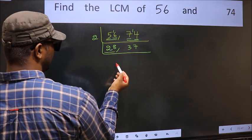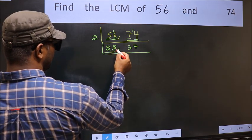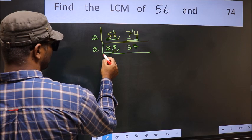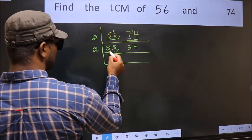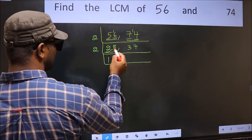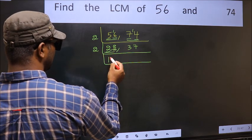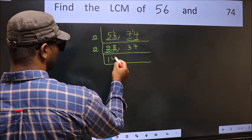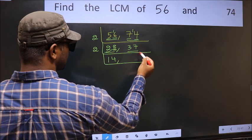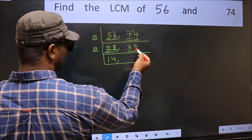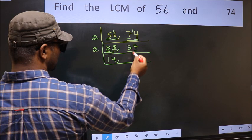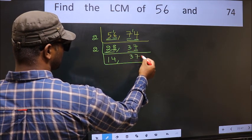Now here we have 28. Last digit 8 — A1 — so take 2. First digit is 2; when do we get 2 in the 2 table? 2×1=2. The other number is 8; when do we get 8 in the 2 table? 2×4=8. The other number is 37. Last digit 7 — not A1 — so this is not divisible by 2. So you write it down as it is.